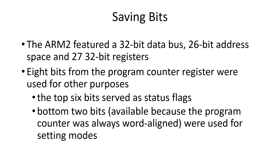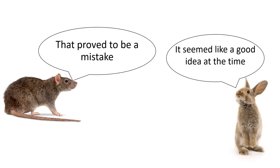The top six bits serve as status flags, and the bottom two bits — because everything is word-aligned — don't need to be there, since you're always picking up word-aligned addresses. They must always be zero, so they were used for setting modes. They were trying to save space. That proved to be a mistake — seemed like a good idea at the time.